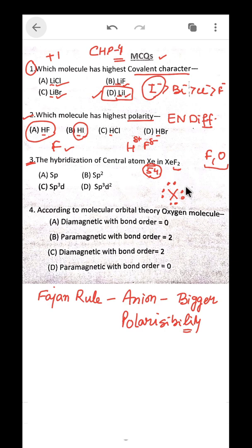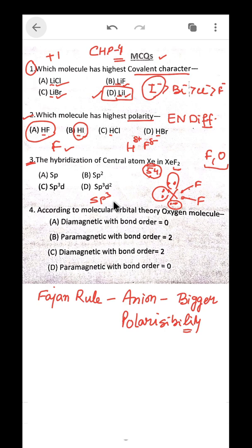Fluorine forms single bonds, so in XeF2 there are 2 bond pairs with fluorine. The remaining electrons give 3 lone pairs. This means s, p, p, p, and one d orbital are all used — so the hybridization is sp3d, which corresponds to option C.